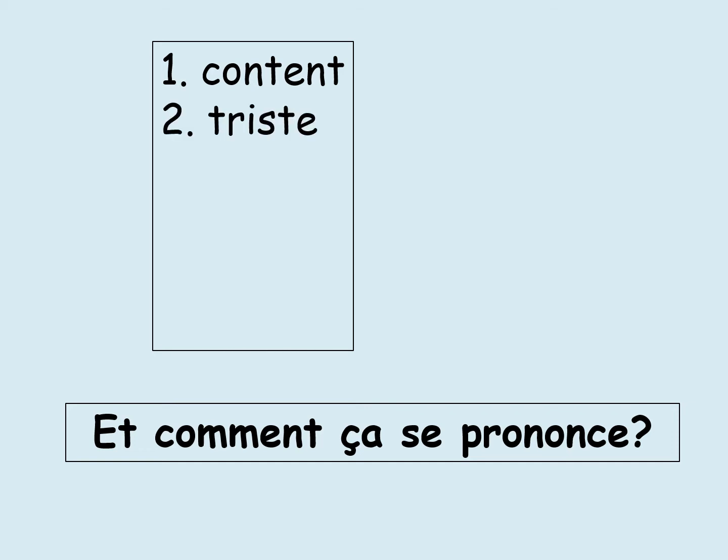Numéro deux, triste, triste. I hope you're repeating these after me. Three, ravi, ravi, ravi. Quatre, fâché, fâché. Remember that accent over the E at the end — your acute accent gives you your E sound.